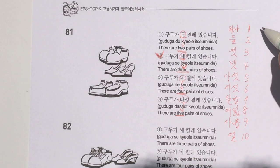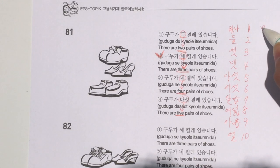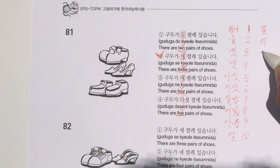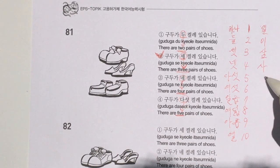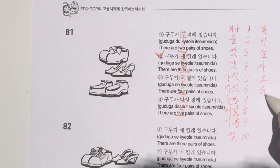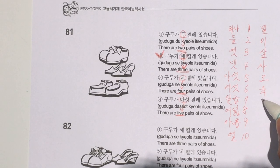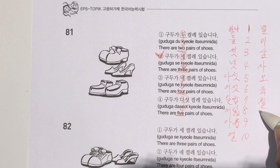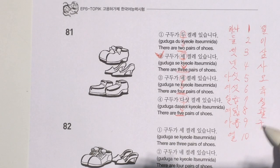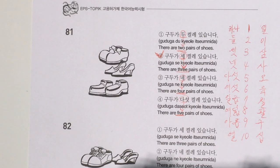The second way is the Sino-Korean numbers: 일, 이, 삼, 사, 오, 육, 칠, 팔, 구, 십.